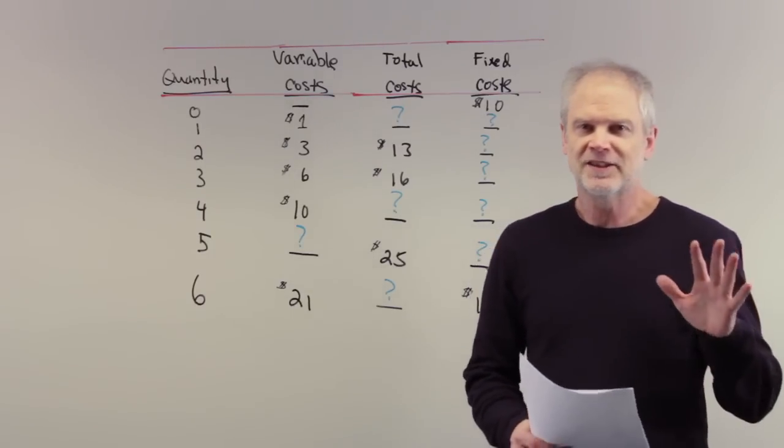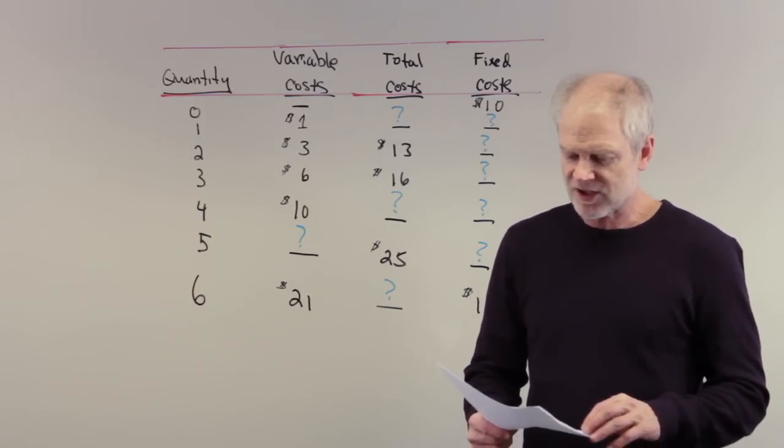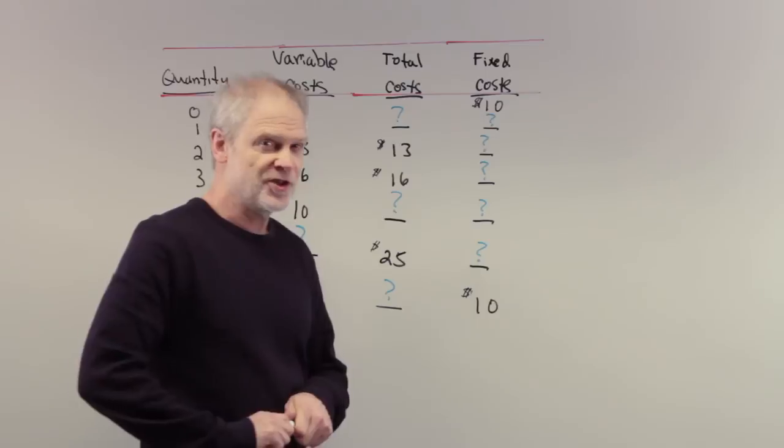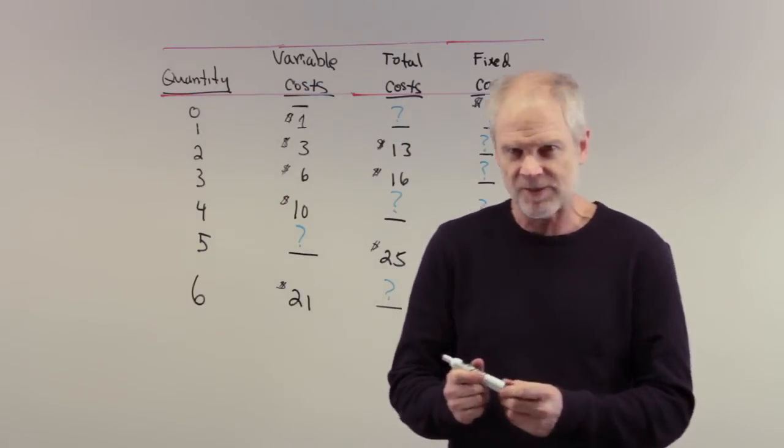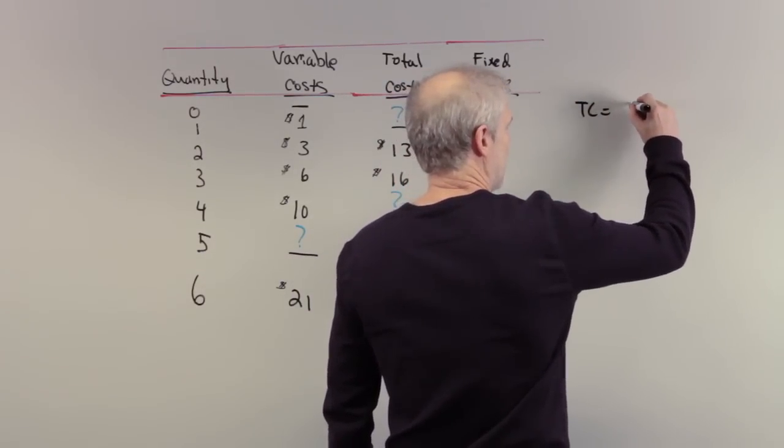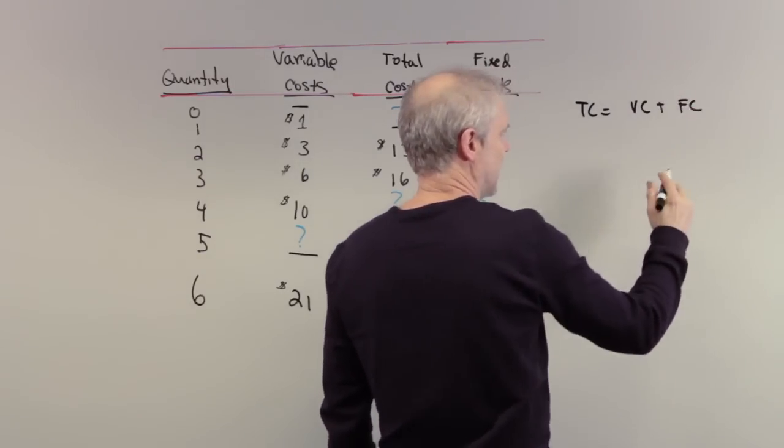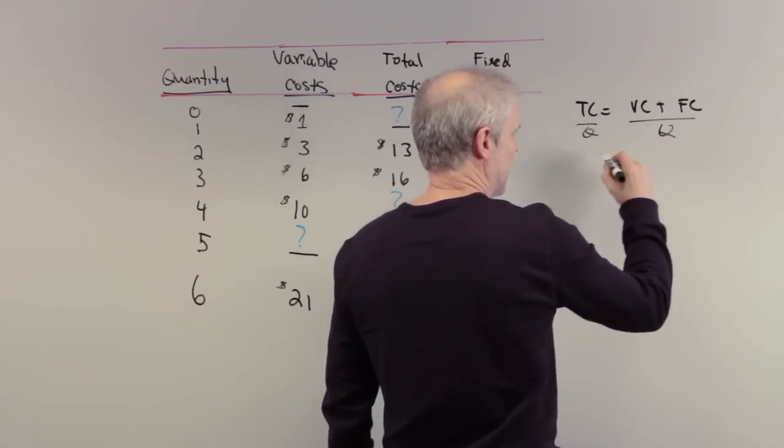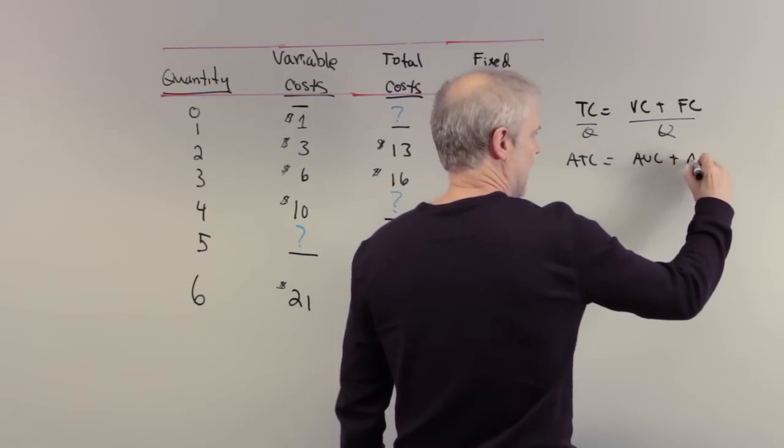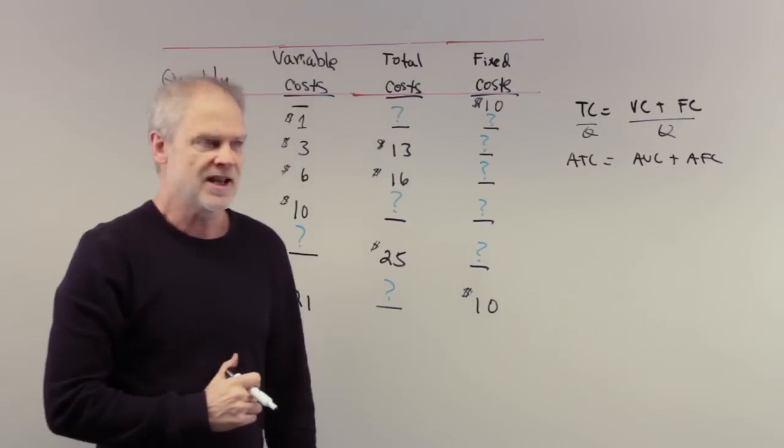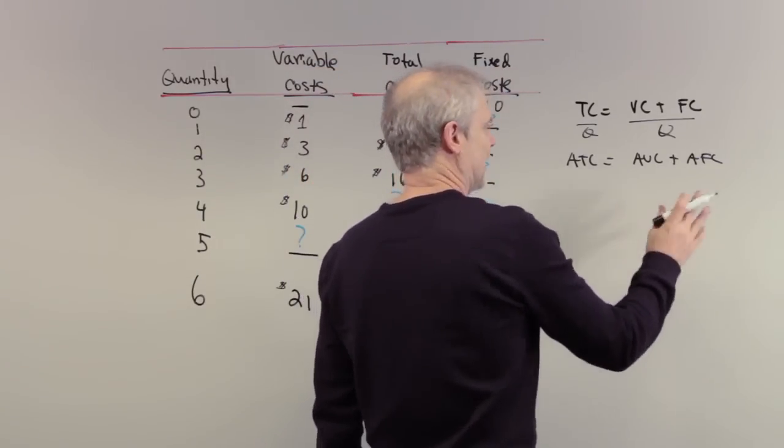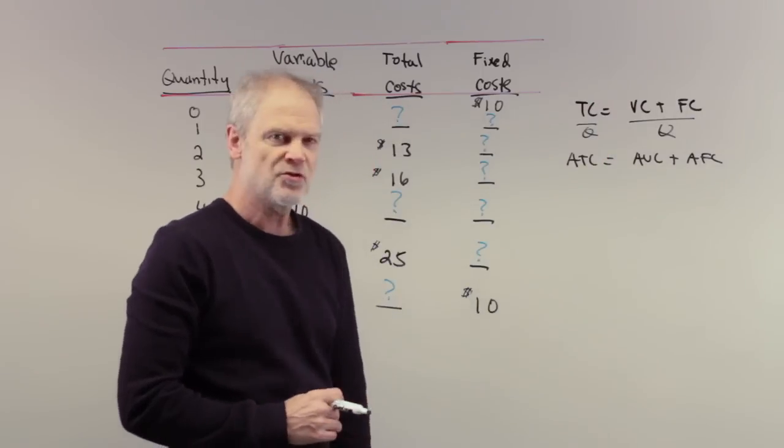The first six questions are going to come from this table. It says the average fixed cost of producing five posters. The first thing you should do when you come in to take the quiz is write this down: total cost equals variable cost plus fixed cost. If you divide both sides by Q, you get average total cost equals average variable cost plus average fixed cost. We know that fixed costs don't vary.